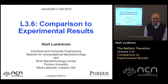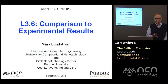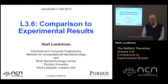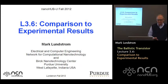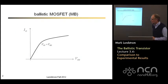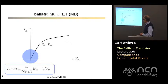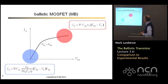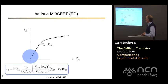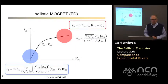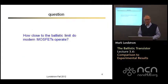Welcome back. We're at the end of week 3, and in this final lecture I'd like to take the ballistic model we've developed and compare it against actual devices to determine how close to the ballistic limit modern-day transistors operate. It will also give us an example of how you apply this theory to measure device characteristics. By way of quick review, we developed a theory for the ballistic MOSFET using Maxwell-Boltzmann statistics, giving us simple expressions for linear and saturated region currents. The question in lecture 6 of week 3 is: how close to the ballistic limit do modern MOSFETs operate?